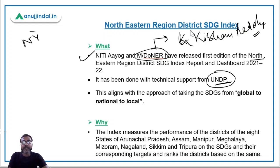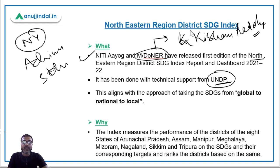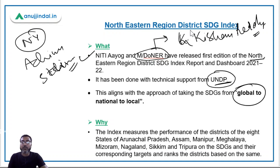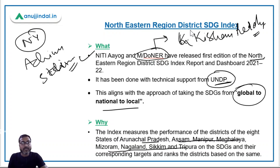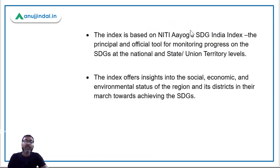UNDP is headquartered in New York and is headed by Mr. Achim Steiner. This aligns with the approach of taking the Sustainable Development Goals from the global to the national to the local level. This index measures the performance of districts of the eight northeastern states — Arunachal Pradesh, Assam, Manipur, Meghalaya, Mizoram, Nagaland, Sikkim, and Tripura — on the SDGs.